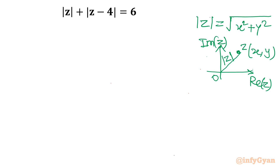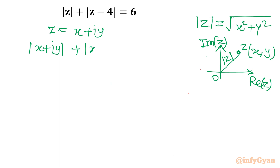Now let's consider our complex number z equal to x plus i y. So let's substitute that in. We get: mod of x plus i y, plus mod of x plus i y minus 4, equal to 6.